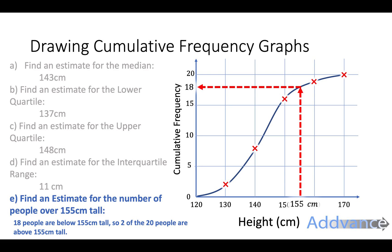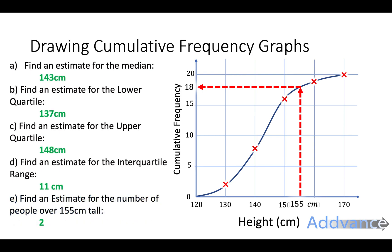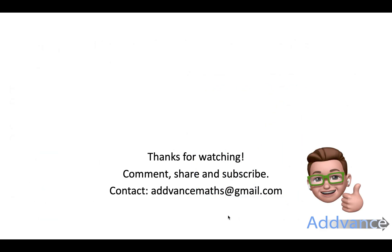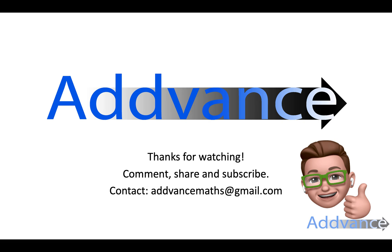So in the exam you'll be asked to find the median, lower quartile, upper quartile, interquartile range, and estimate the number of people above or below a certain amount. You might need to re-watch parts A, B, C, D and E to see how I did that again. Thank you for watching — if you'd like to see more videos from Advanced Maths, remember to subscribe. If there's something you're struggling with in Maths, let me know in the comments and I'll make a video about that. Thanks for watching and good luck in your exams!